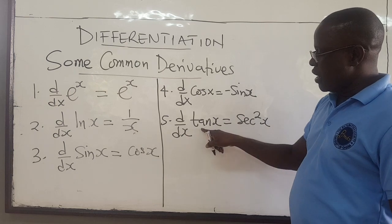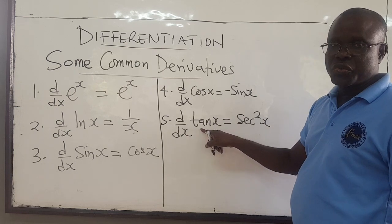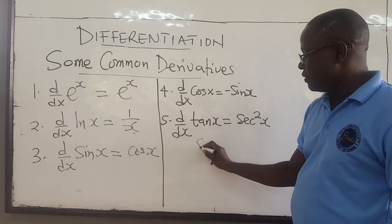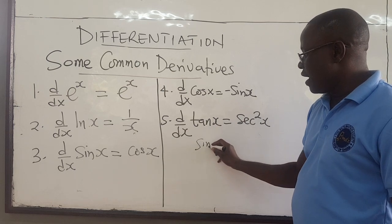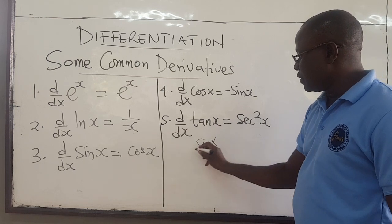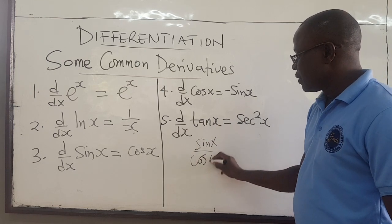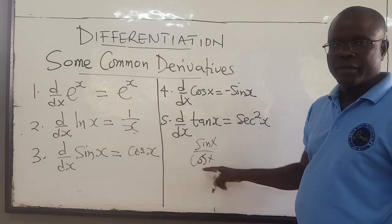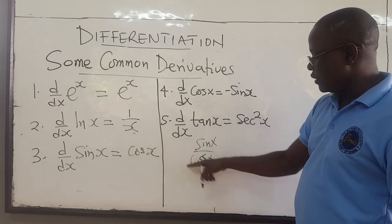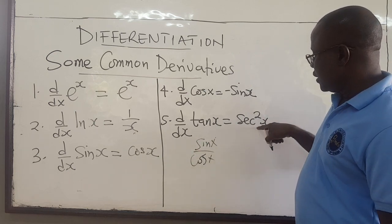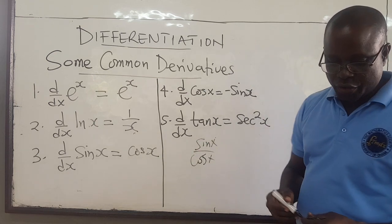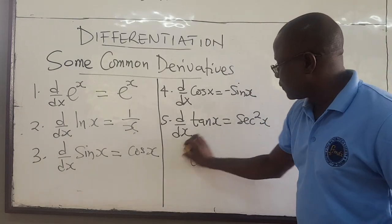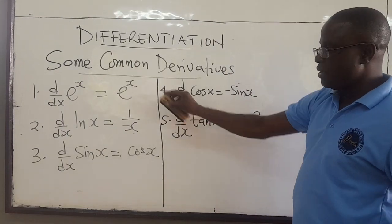You can use the quotient rule to prove this, because tan x is sine x over cosine x. So you could apply the quotient rule, find the derivative, and then show that it is equal to sec squared x. Keep this in mind.